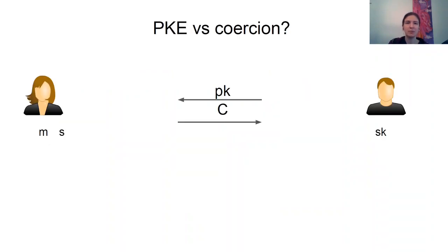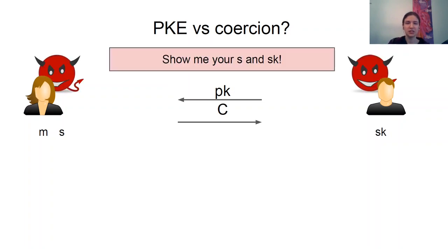When we talk about public key encryption, we usually have an eavesdropping attack in mind. However, in this paper we are looking at a stronger adversary, called a coercer, who has an additional power. After the communication happens, this adversary can come to both parties and demand to see all their randomness used to transmit a plaintext.